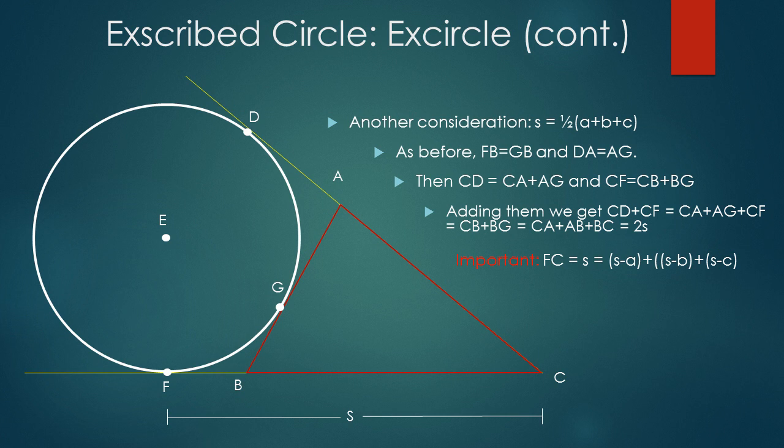Continuing our discussion of excircled circles, another consideration is that the semi-perimeter is half the perimeter. Just as before, FB is equal to GB and DA is equal to AG. Notice then that CD is equal to CA plus AG, and CF is equal to CB plus BG. When you add them, we get CD plus CF equals CA plus AB plus BC equals 2s. So we conclude that FC is equal to s.